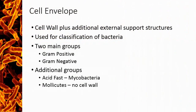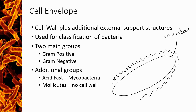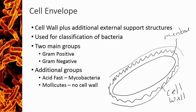The bacterial cell envelope consists of structures that are found outside of the bacterial cell membrane. Here we have a bacterial cell — this would be the plasma membrane — and the cell envelope are the support structures found outside of the membrane. The majority of bacteria will contain some type of cell wall, and then other bacteria outside of that also contain a protective layer called a capsule or an S layer.